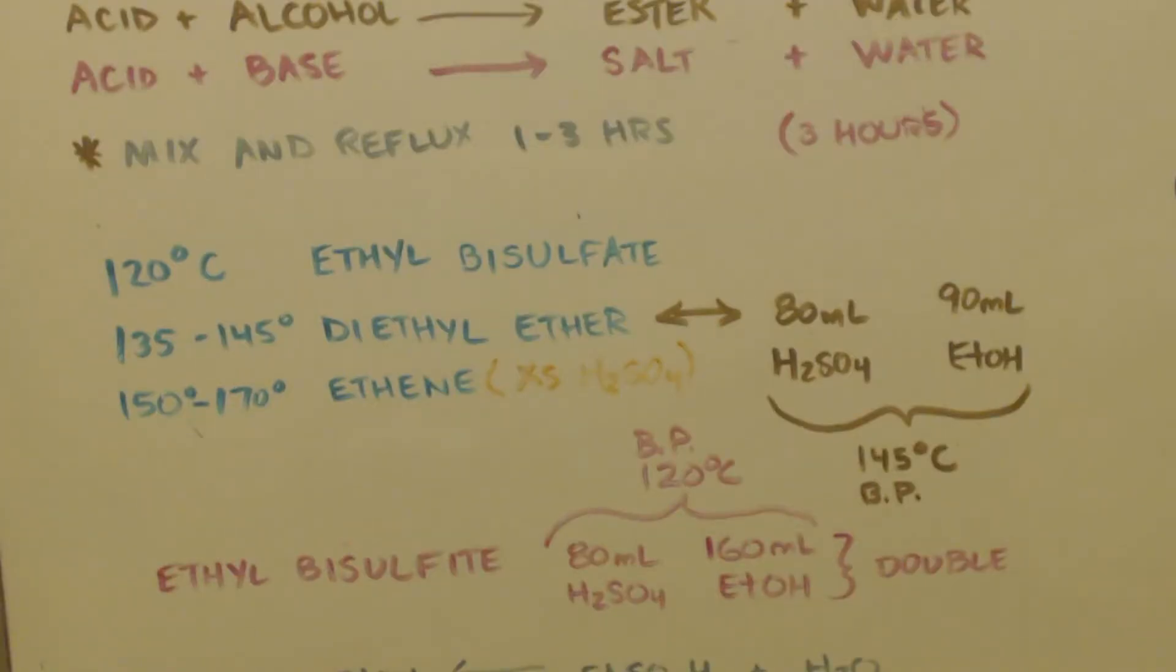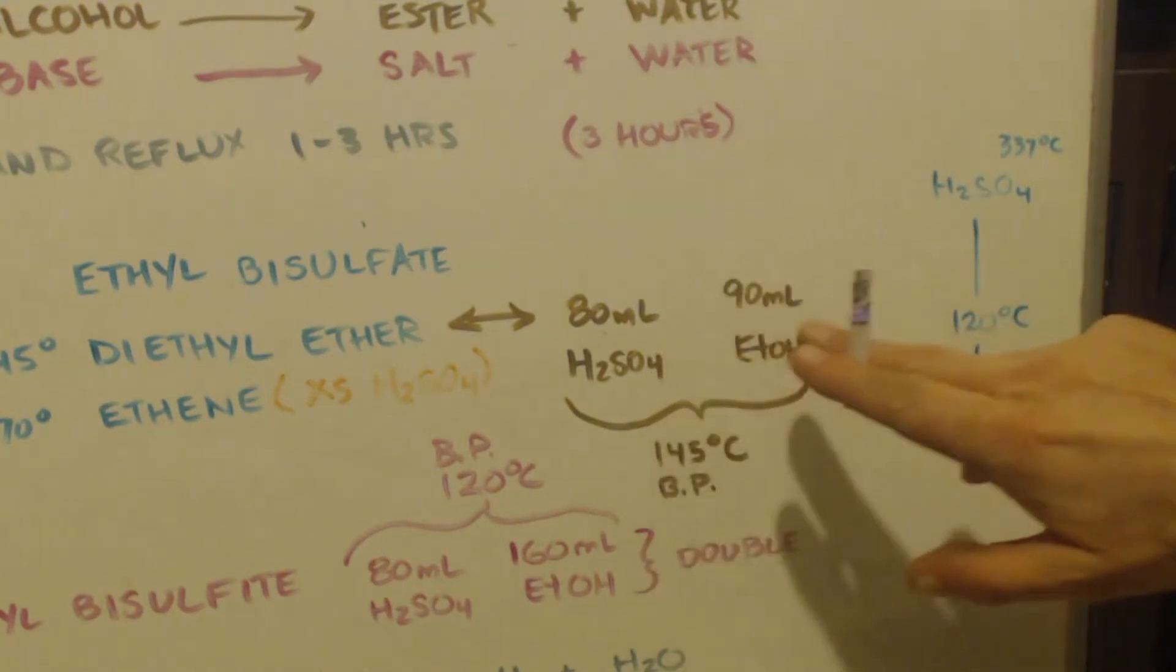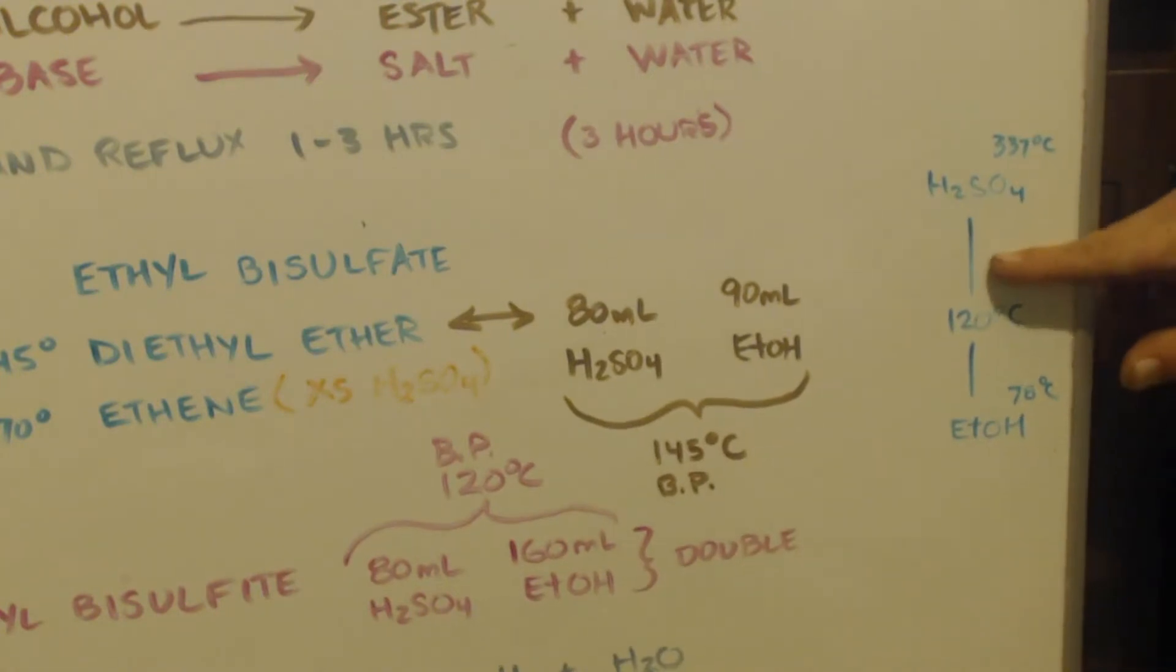Now we want to reflux it at 120°C. I want you to look over here. Here's the boiling point of sulfuric acid, ethanol, and where we want to be. I don't look these up, so they might not be perfect boiling points. But if you have a mixture in the pot of these two things, like we said, 80 and 90 milliliters, that boils at 145°C. That would be up here.